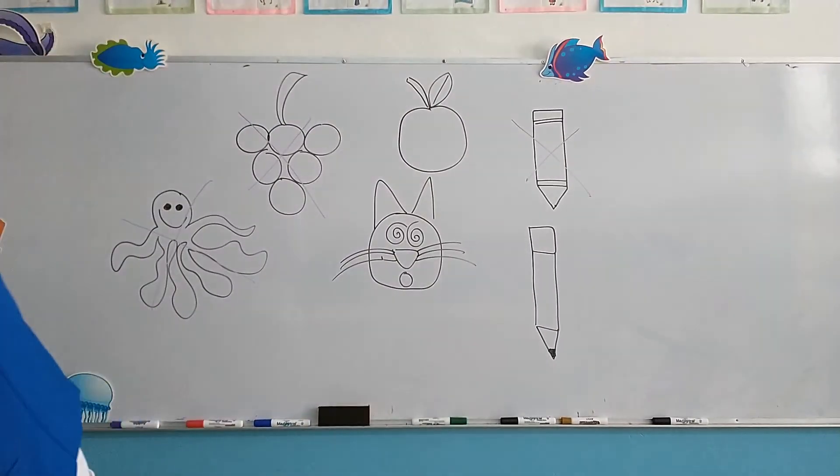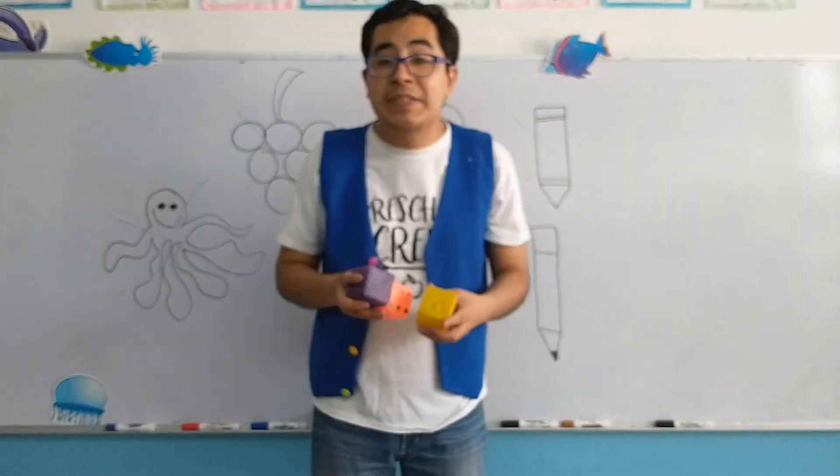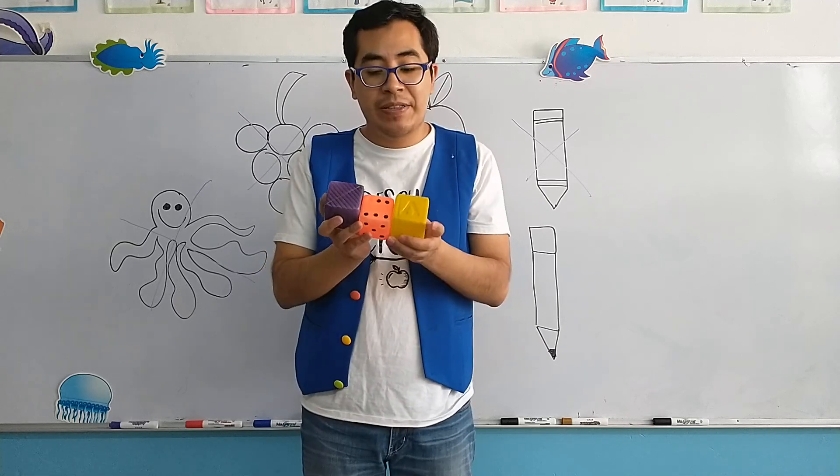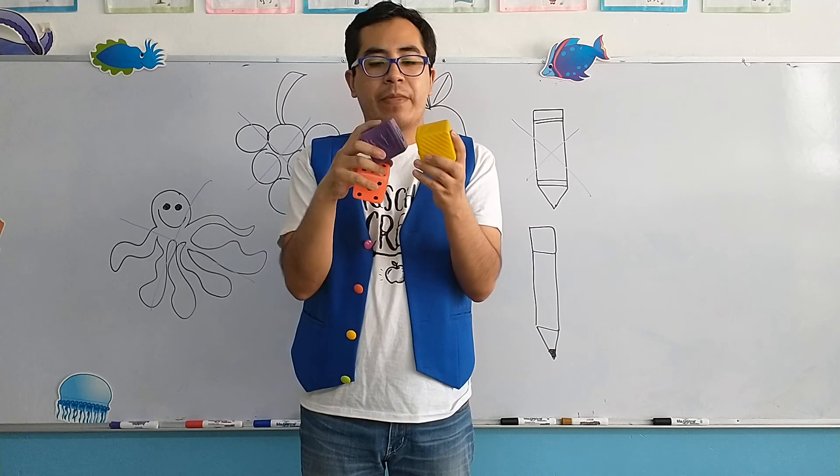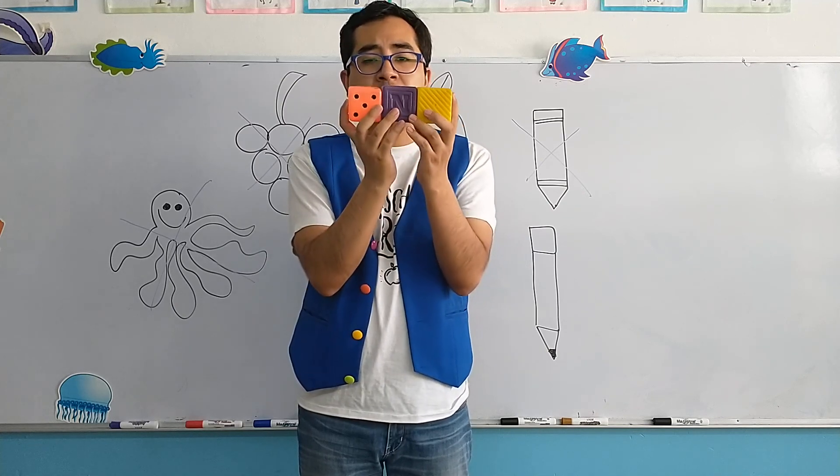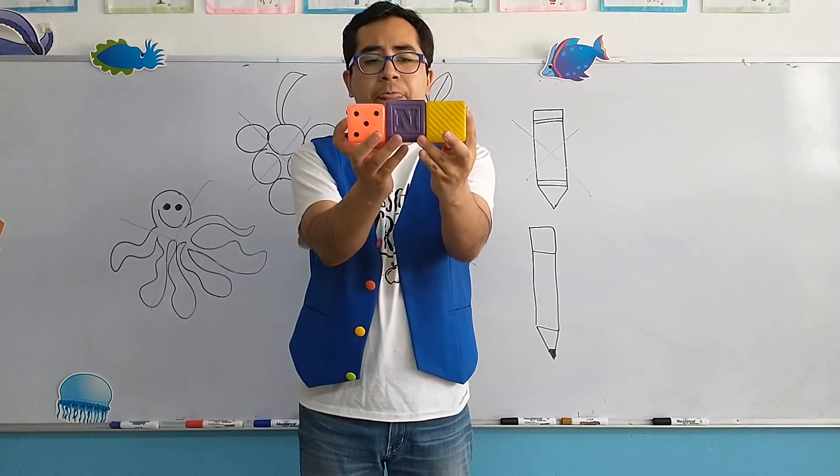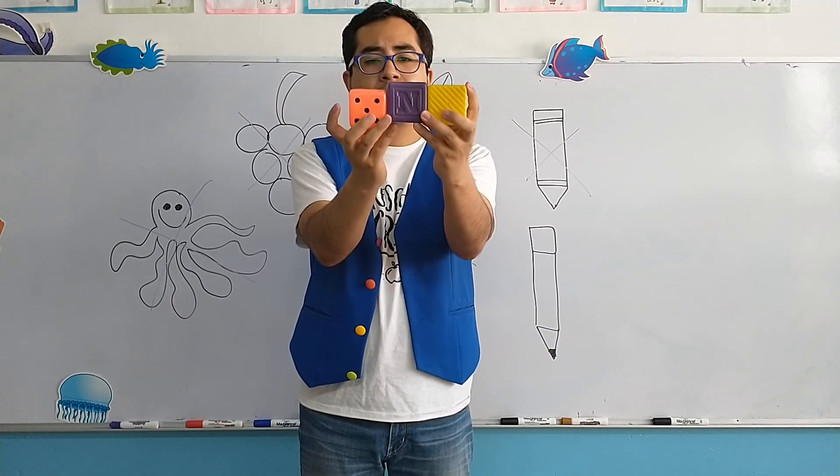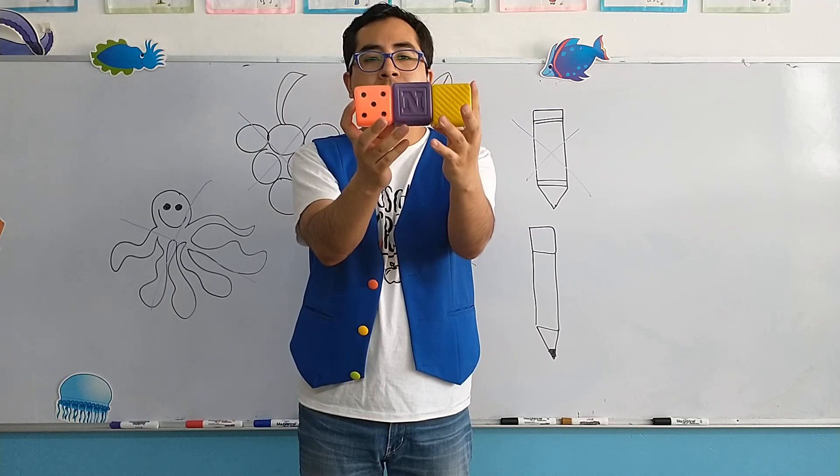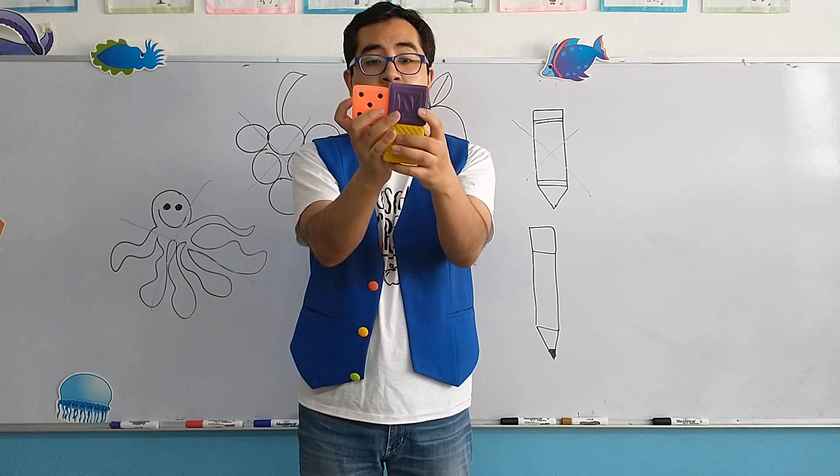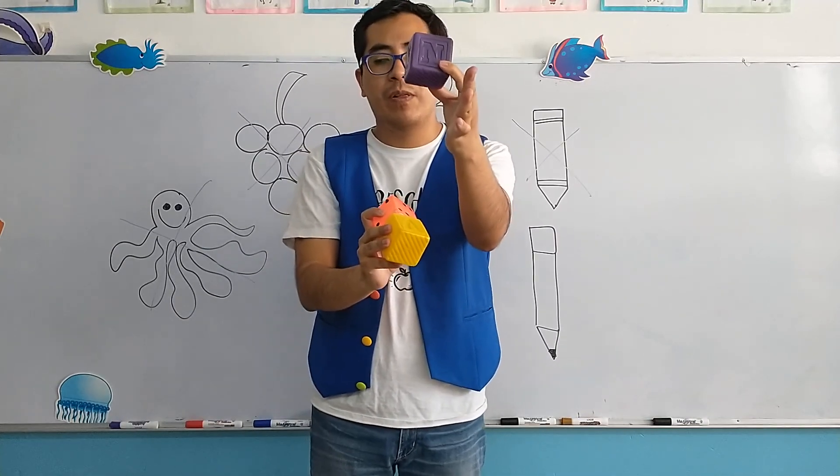Now let's continue with plastic dices. Now a dice is in Spanish, dado. As you can see here, I have three dices. Now which one of these three is color purple? One, two, or three? Number two, this one right here, color purple.